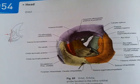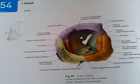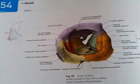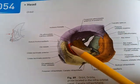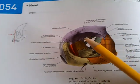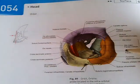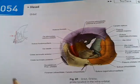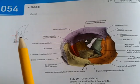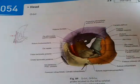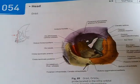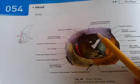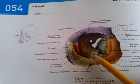Question 9: skull, the orbit. Here you see the orbit — this is the left orbit. You can see you have a frontal view, and you have the orbital opening.